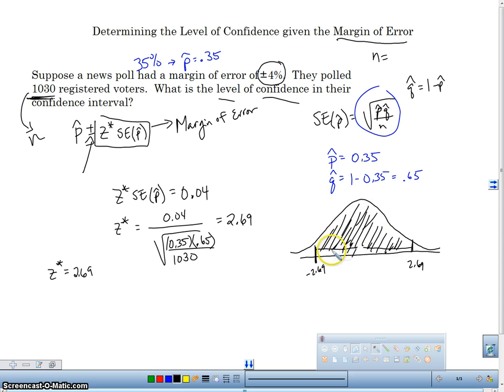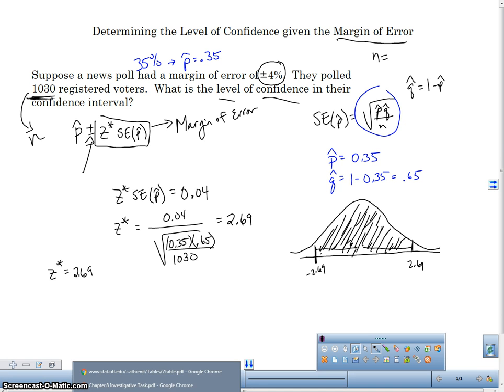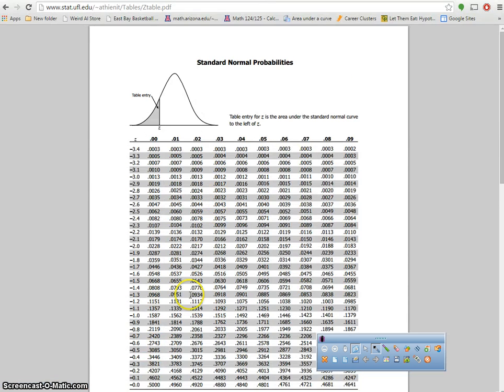So I'm going to go ahead and look in my normal model z table. And I'm going to find the percent underneath 2.69. And then I'm going to subtract that from the percent underneath negative 2.69. So let's go to our z table here. So negative 2.6, 2.69 is going to be 0.0036.